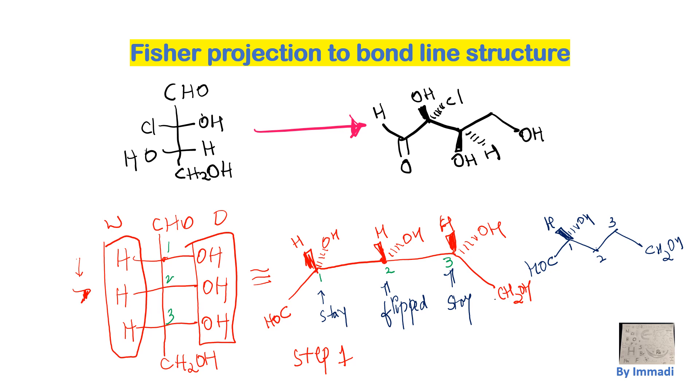And for 2, since I said flip here, so since we are flipping it, so this one OH which was on the dash is going to come onto the wedge. And the hydrogen which was on the wedge is going to be on the dash.